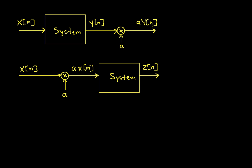Next thing to check is linearity. To be linear, a system has to satisfy both homogeneity and additivity. To test for homogeneity, I take my signal, run it through the system, and multiply the output by a. Then I take my signal, multiply it by a, and run it through the system. If these two results are the same, the system satisfies homogeneity. If I take x as the input and y as the output, then y is x of n times x of n plus 1, and multiplying by a gives a times x of n times x of n plus 1.